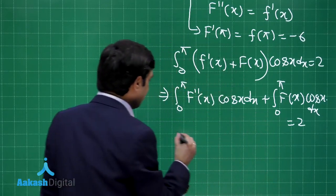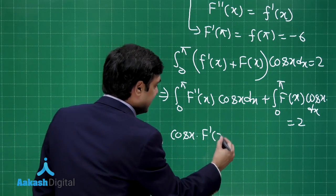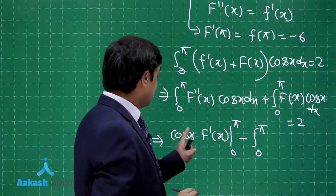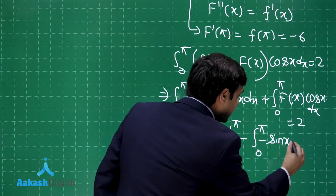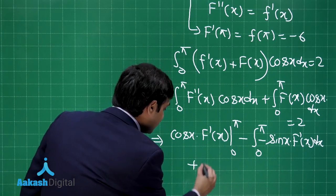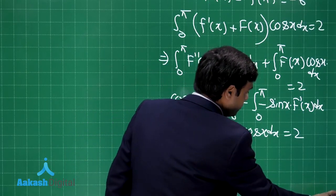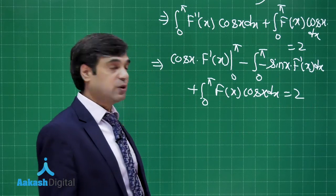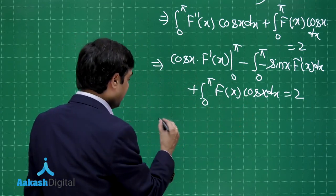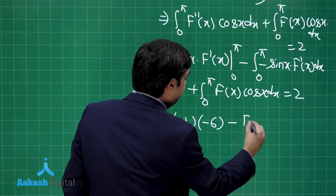Keeping the second integral and integrating the first by parts: [cos x · f'(x)]₀^π minus ∫₀^π (−sin x)·f'(x) dx, plus ∫₀^π f(x)·cos x dx equals 2. Applying limits to the first term: at π, f'(π) = −6 and cos π = −1, giving (−1)(−6) = 6; minus f'(0) because cos 0 = 1.